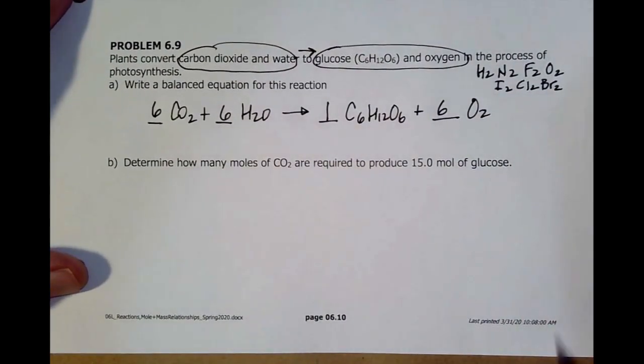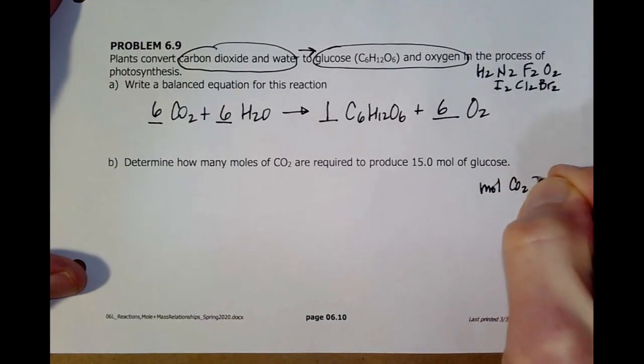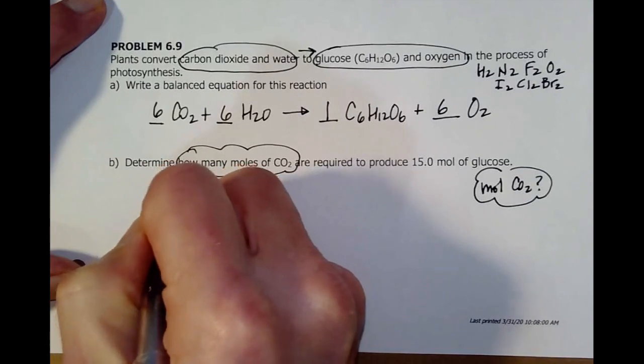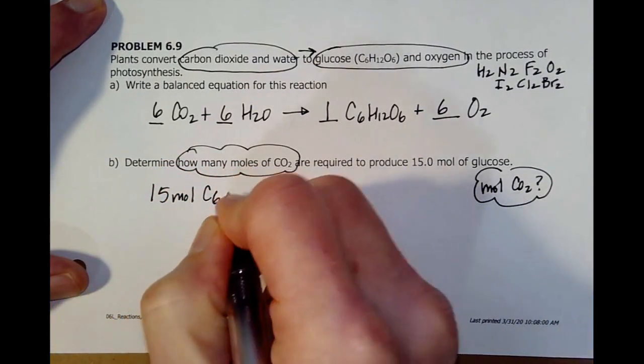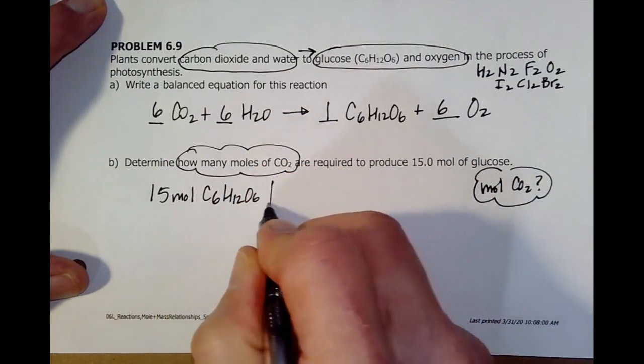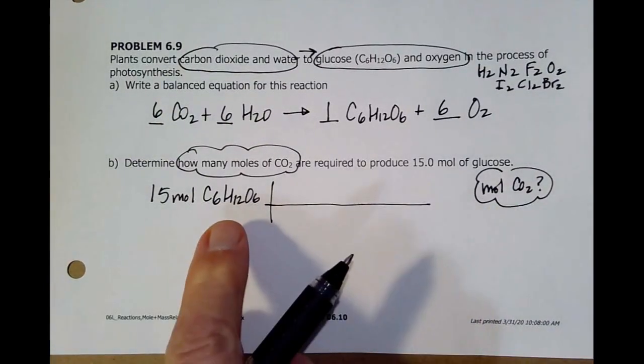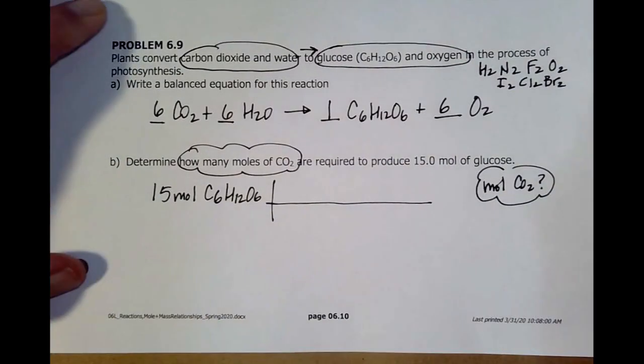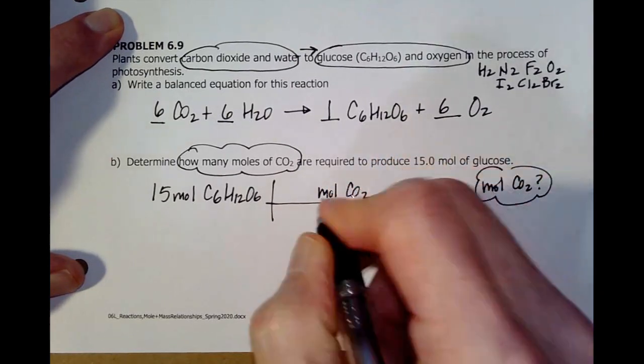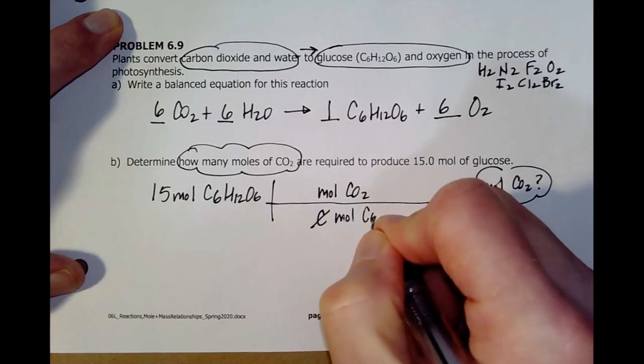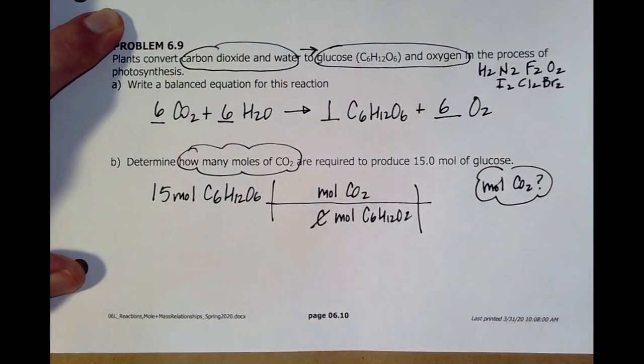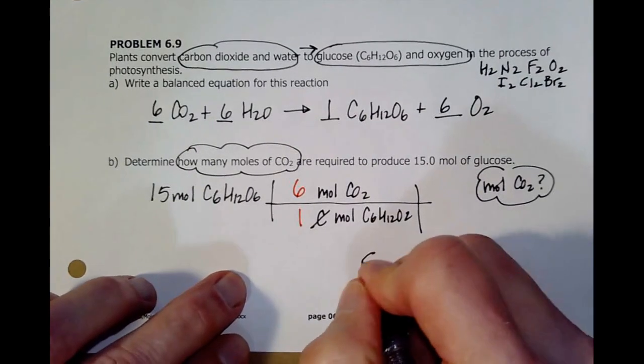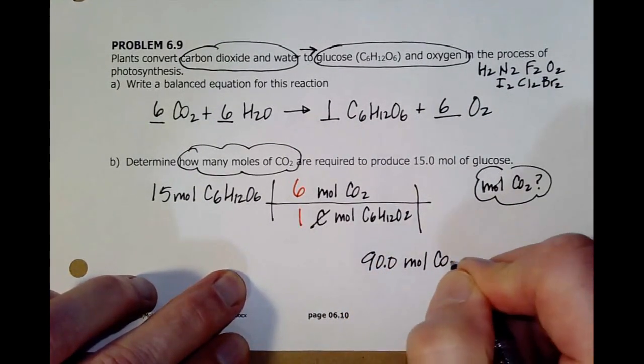Now, that says, okay, I want to get to, I want to know how many moles of CO2, right? There's the how many, how much, what I'm trying to find. Starting with 15 moles of the glucose. So, I'm really saying, okay, how many moles of this do I need to produce this. Now, I'm going to go, moles of CO2, moles of glucose. Go back to my recipe and it says, oh, I need six moles of that to get one mole of glucose. So, I need 90 moles of CO2.